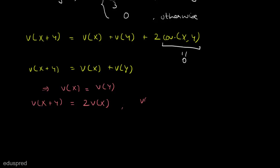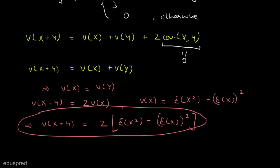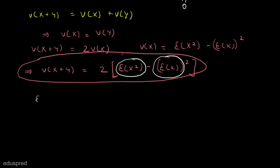We know that variance of x equals E[x²] minus (E[x])². So this implies that variance of (x + y) is equal to 2·(E[x²] − (E[x])²). Our problem boils down to finding this. To solve this, we have to find E[x²] and E[x]. So first of all, let's find E[x²]. We know that E[x²] equals the integration of x² multiplied by f(x) from 0 to 1 dx.